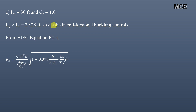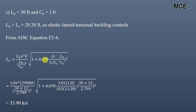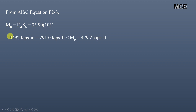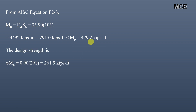For this case, we use AISC equation F2-4 to find FCR, the elastic buckling stress. Putting in the values of the different terms, FCR equals 33.9 KSI. Using AISC equation F2-3, the nominal strength equals FCR times SX = 33.9 × 103 = 3492 kip-inch, or 291 kip-feet, which is less than the plastic moment capacity of 479.2 kip-feet. The LRFD design strength is 0.9 × 291 = 261.9 kip-feet, and the ASD allowable strength is 291 / 1.67 = 174.3 kip-feet.